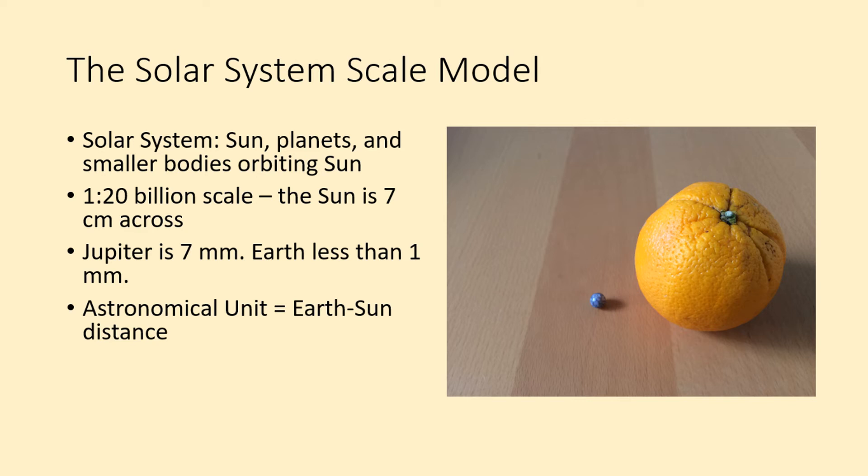So if our Sun were about the size of an orange, the Earth would be just over seven meters from the Sun, or about 25 feet. Pluto is almost 300 meters from the Sun, which is close to 1,000 feet.